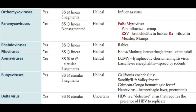Bunyaviruses have a segmented genome as well — three segments — and helical capsid symmetry. They include the California encephalitis virus, the sandfly and Rift Valley fever virus, the Crimean-Congo hemorrhagic fever virus, and the Hantavirus, which causes hemorrhagic fever and has also been associated with pneumonia. The deltavirus family is a non-segmented circular single-stranded RNA with a helical capsid, and the important virus here is HDV or hepatitis D virus — remember D for delta.